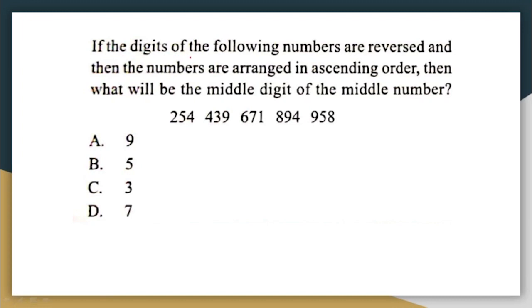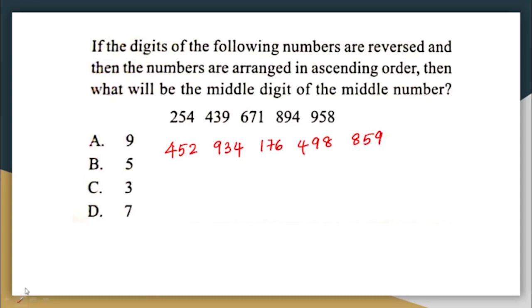Next question: if the digits of the following numbers are reversed and then the numbers are arranged in ascending order, what will be the middle digit of the middle number? We are reversing the digits in the given numbers and writing them first. So 254 will become 452, this will become 934, 176, 498, and 859.